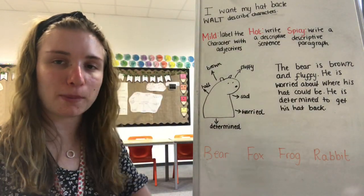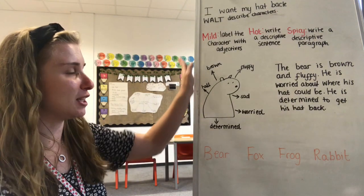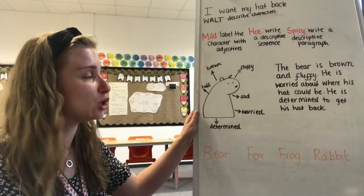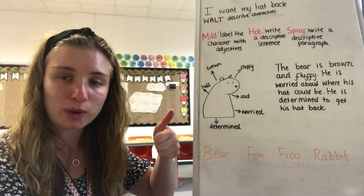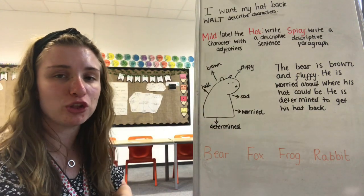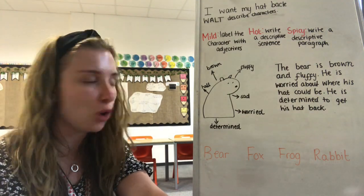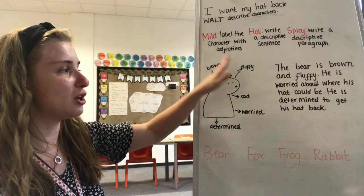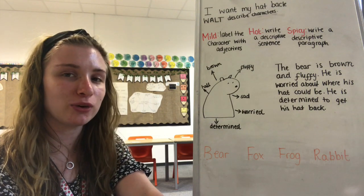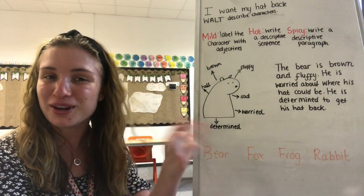So remember, we are all starting on mild. We are all going to draw that picture, or maybe just write the character's name down, then label your character with the different adjectives — I'd like to see at least five, but try to challenge yourself and do as many as you can. Then if you want to challenge yourself, write your sentence using one or two of your adjectives. And if you want to go further, write your paragraph with different adjectives to make more sentences. I hope you have fun with this. Mrs Fry and I are looking forward to seeing your character descriptions — we know how brilliant you are at coming up with adjectives. Make sure you send us an email with them, and I will see you for tomorrow's English lesson. Bye!